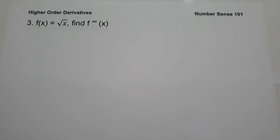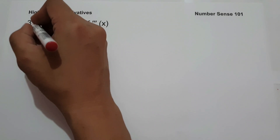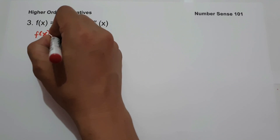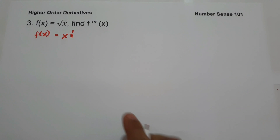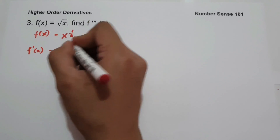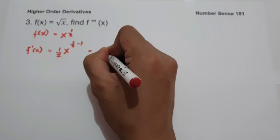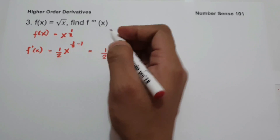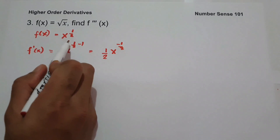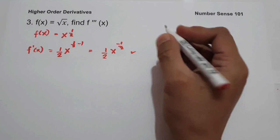On number 3, f of x equals square root of x, and we are going to find the third derivative of the given function. The first thing we do is write the square root of x in exponential form: f of x equals x raised to 1 half. So the first derivative — using the power rule — is 1 half times x raised to 1 half minus 1, which simplifies to 1 half x raised to negative 1 half.